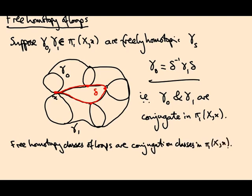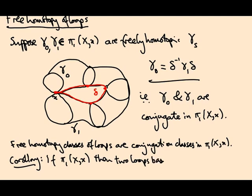This is actually a really useful fact because for example if your fundamental group is abelian like the integers, conjugacy is really boring because in abelian groups everything commutes, so the delta and the delta inverse will cancel. So in an abelian group there's no difference between homotopy and free homotopy. So let's write this down. Corollary: if π₁ is abelian, then two loops based at x are freely homotopic if and only if they're based homotopic.